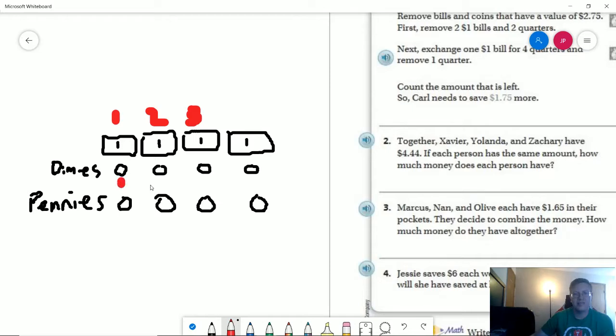Person one is going to get this dime. Person one is going to get this penny. Person two is going to get this one. Person two is going to get this one. Person three is going to get this one. And person three is going to get this one.